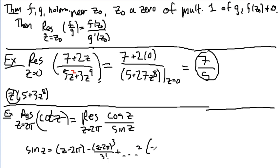So, in short, this is equal to z minus 2π times 1 minus z minus 2π squared over 3 factorial plus a bunch of higher terms. This does not go to 0 when you plug in 2π. So this really is a zero of multiplicity 1.